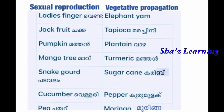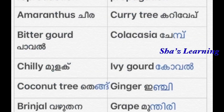Vegetative propagation is done through roots, stem, or leaves. Examples: elephant foot yam, tapioca, plantain, turmeric, sugarcane, pepper, moringa, curry leaves, colocasia, ginger, and grapes. For sexual reproduction, additional examples include amaranthus, bitter gourd, chili, coconut tree, brinjal, and lady's finger.